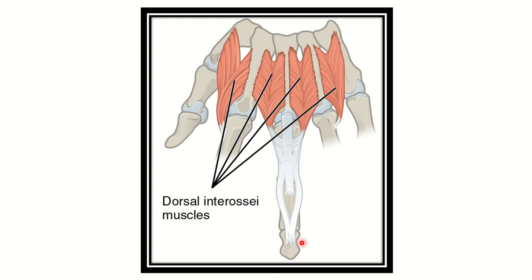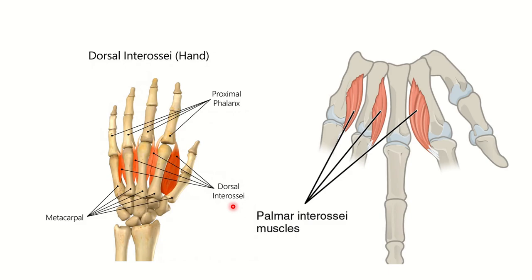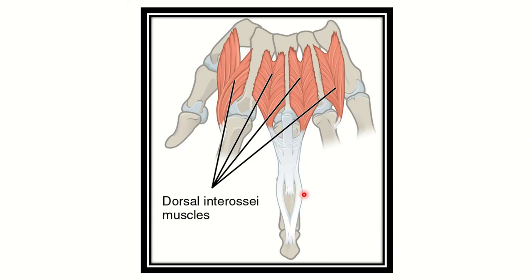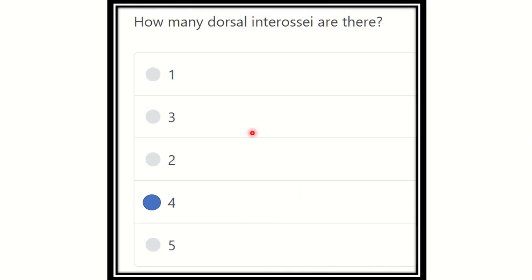In the next picture, we can see the dorsal interossei muscles in a closer look — one, two, three, four. So four dorsal interossei. Our final answer is that there are four dorsal interossei muscles.